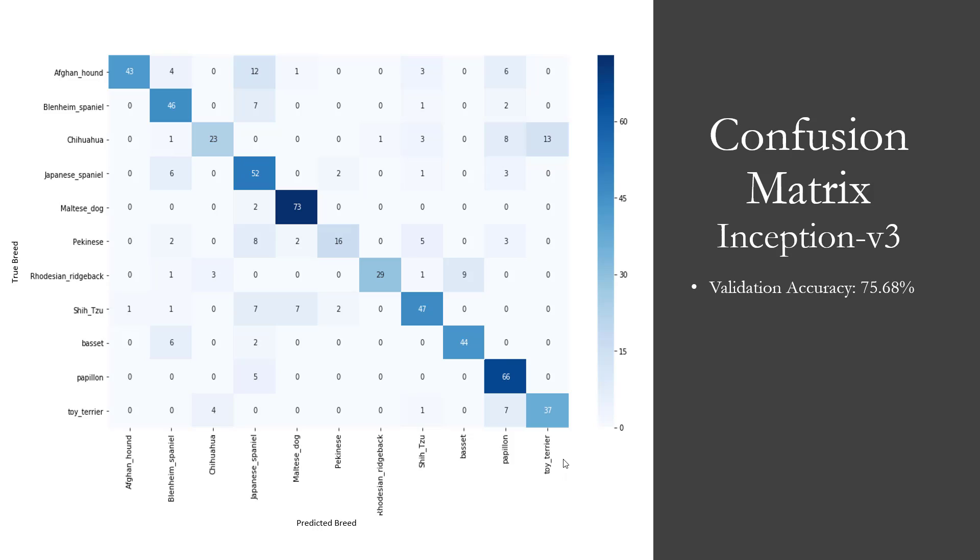Unfortunately, in most of our training data, the chihuahua was the standard color - light brown, dark brown. That's why when a black chihuahua comes along in the validation set, it often predicts it as a toy terrier, which is most often black.